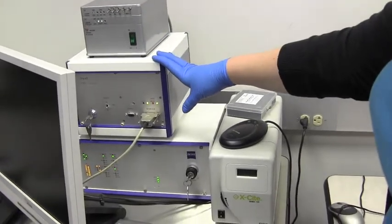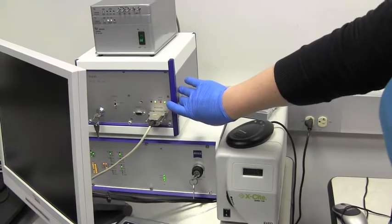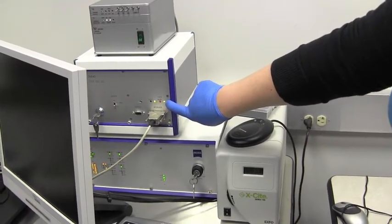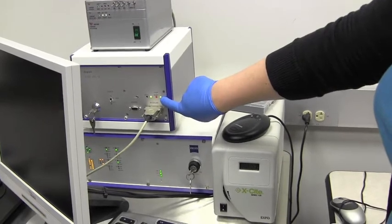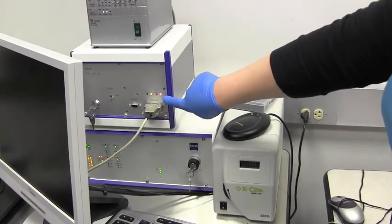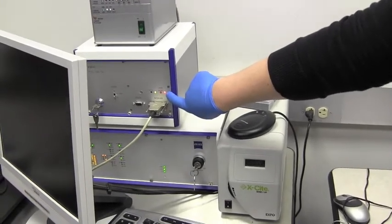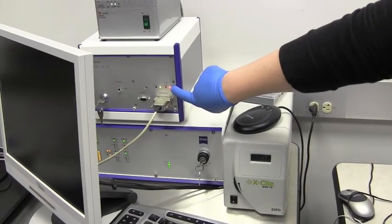Now when you first turn on the laser power, you're going to have a green light to the right of the laser on off red button. After this has been lit for a few minutes, you can then hold that down and it will turn red. The red means the laser is powered on and ready to go.